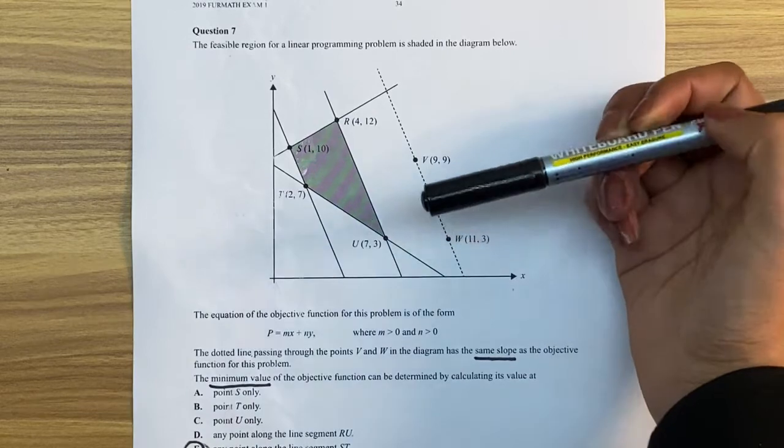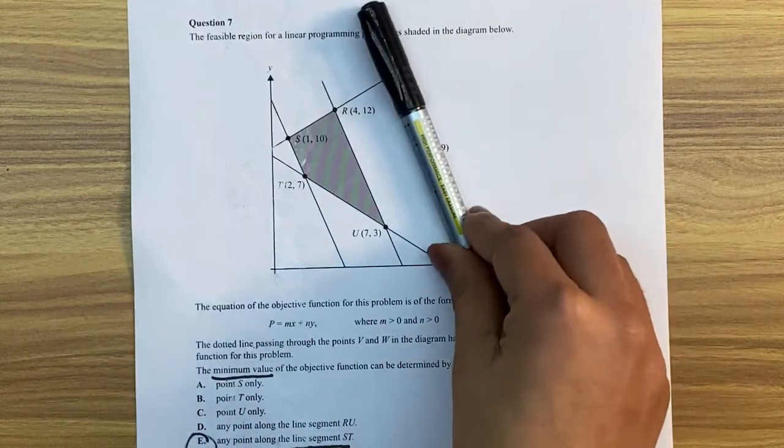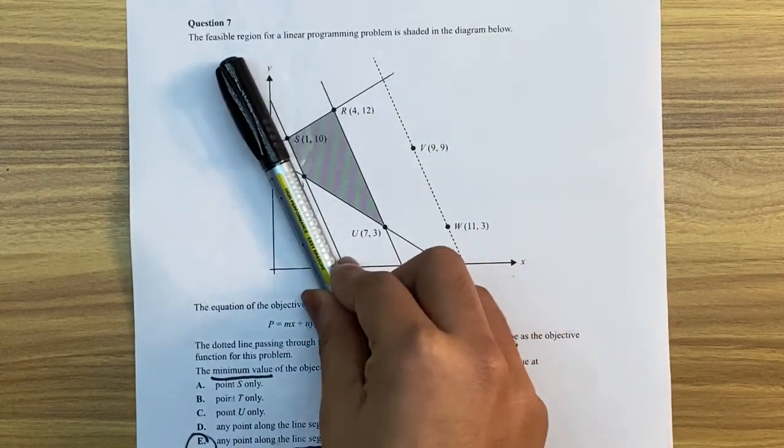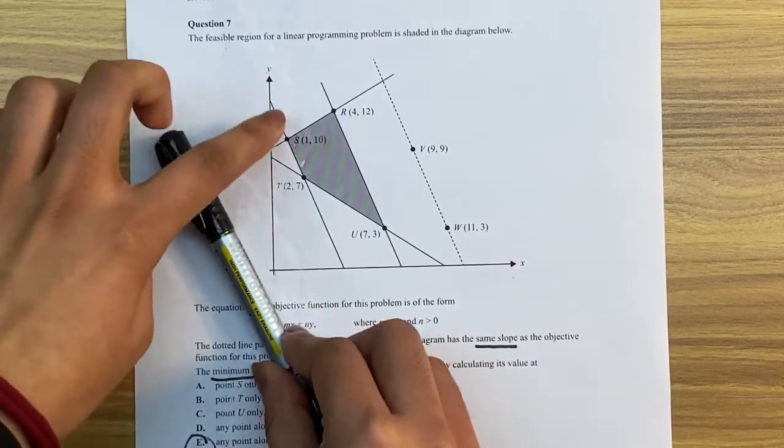Whereas using the sliding line, we can just grab our pen, put it on the dotted line, slide it down to find the minimum, and we can easily see it passes through s and t.